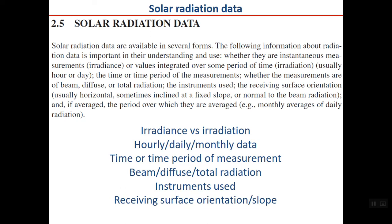The next topic is solar radiation data. When designing a solar energy system, the first thing you need is solar radiation data for that location. Solar radiation data are available in several forms: they may be expressed as irradiance (W/m²) or irradiation (J/m²), and may be provided as hourly, daily, or monthly values — monthly data being daily averages and daily being hourly averages.